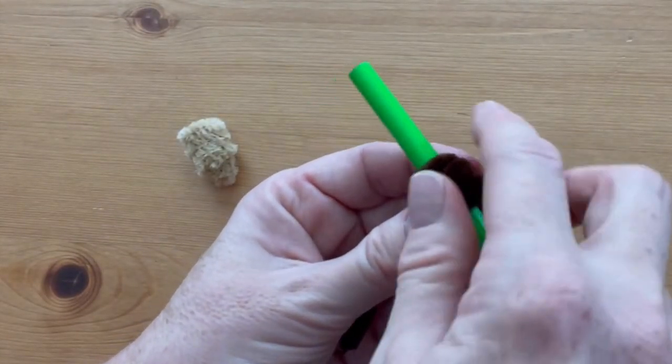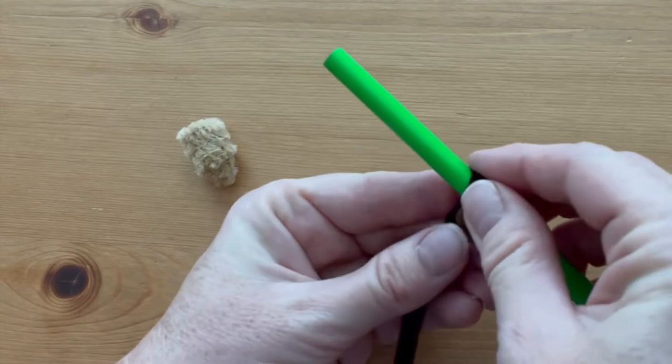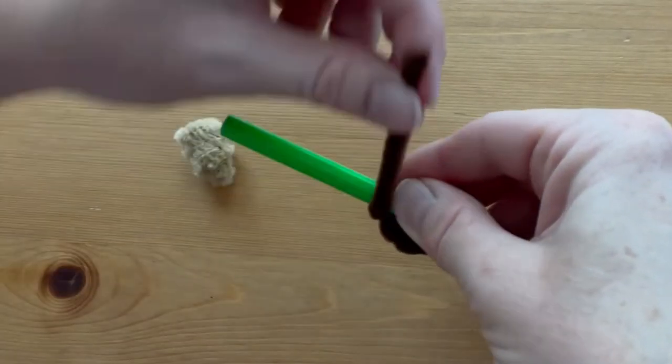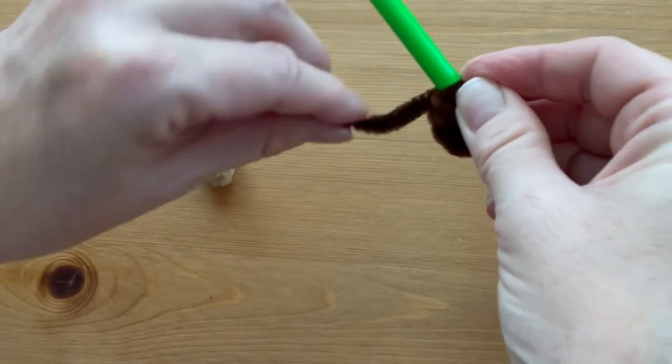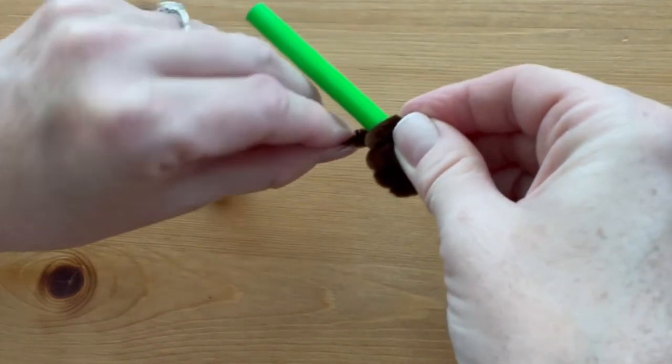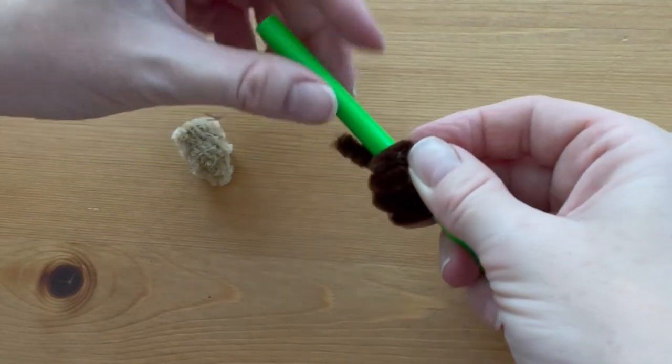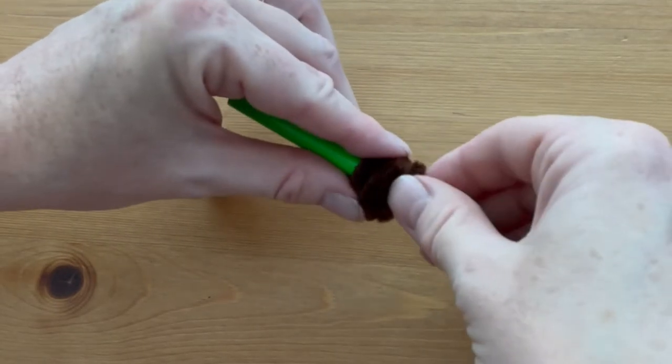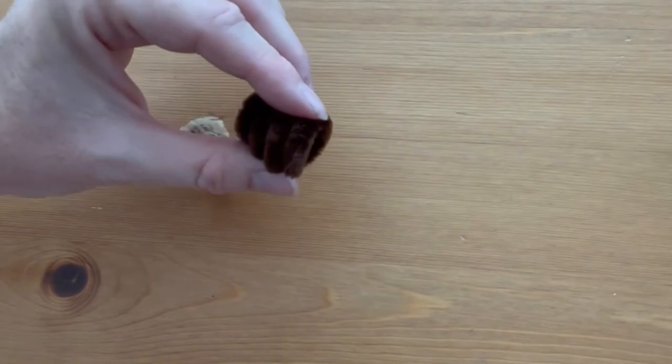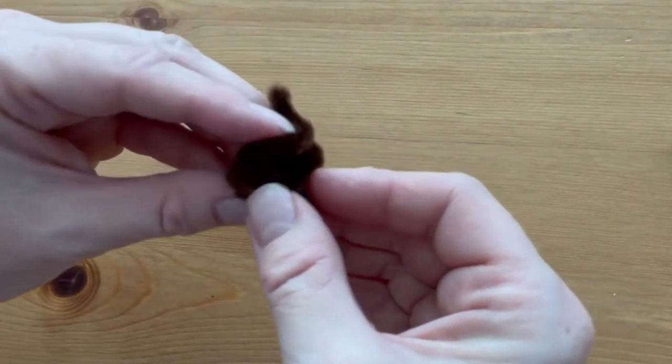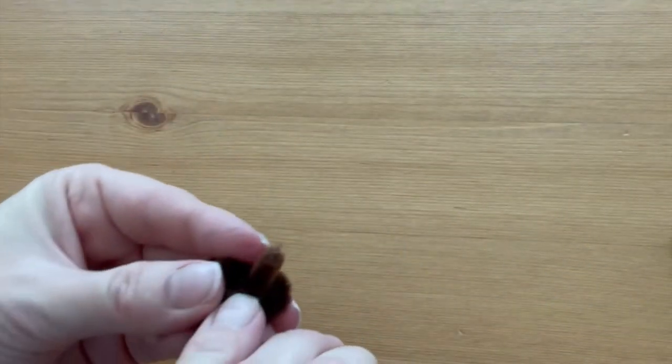Put a pencil in, and holding everything together, continue spiraling as close as you can get, one on top of the other, and leave a little tail sticking up at the end. Remove the pencil.